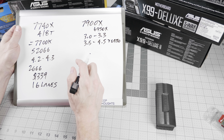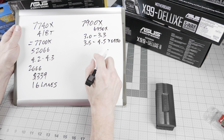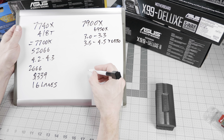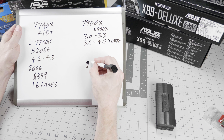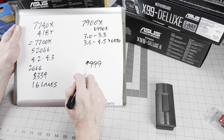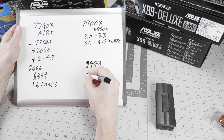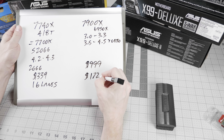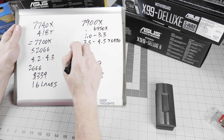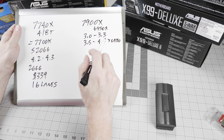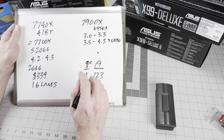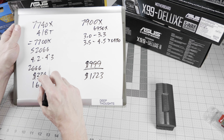You also get 2666 RAM support instead of 2400, and on top of all that, the 7900X is $999 US. While a thousand dollars sounds like a lot, the 6950X was $1,723 — so you're saving over $700 going with a CPU that's faster, has faster RAM support, and on a new platform to boot. At $999, this is the high-performance sweet spot of the lineup.